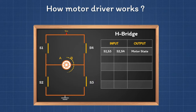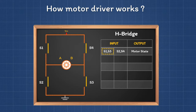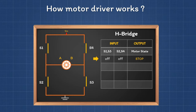At the center of the diagram is a motor; the top and bottom sides are VCC and ground. On the right side there is a table — the first column shows the position of S1 and S3, the second column shows the position of S4 and S2, and the last column shows the state of the motor. With all four switches off, there is no current flowing through the circuit and the motor is in a stop position.